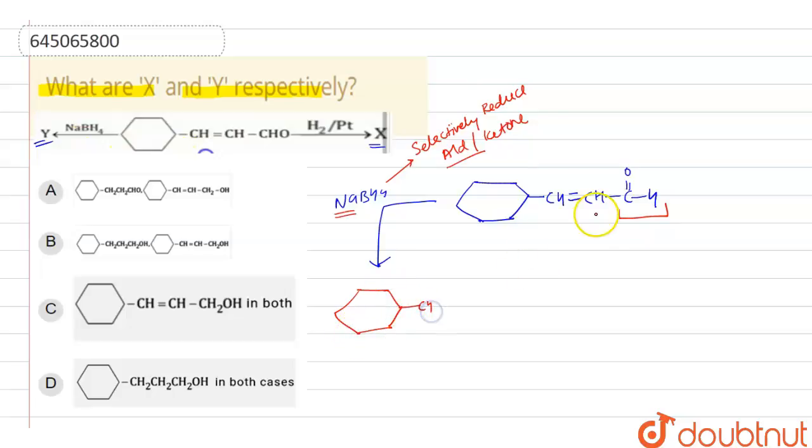Here we have CH. It will not do anything with pi bond. Here we have CH, it will convert into CH2OH. So alcohol will be there.